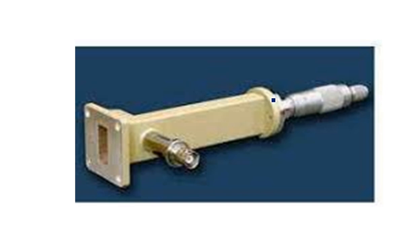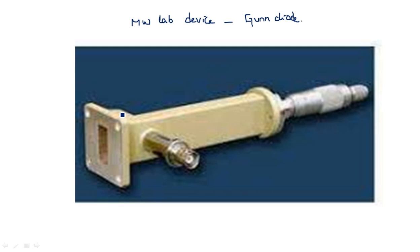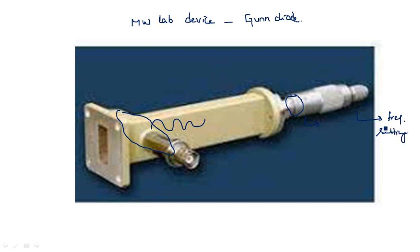This is the general Gunn diode you have in the laboratory — it is a microwave lab device. If you have a microwave laboratory at your college you can go and ask for this device. The Gunn diode produces oscillations and electromagnetic signals. There is a rotational scale, like a screw gauge, used for frequency setting, since the oscillator gives oscillations at a set frequency selected by this scale.